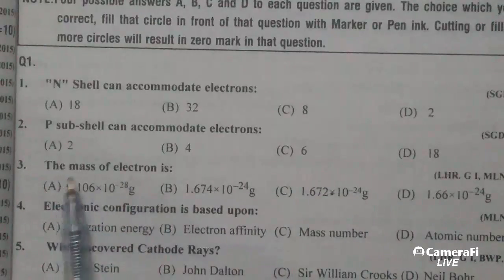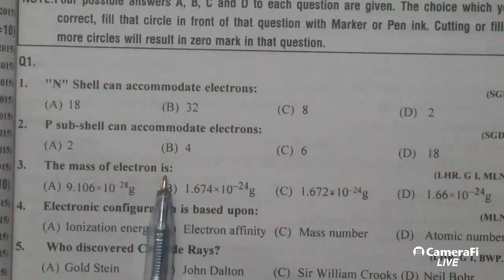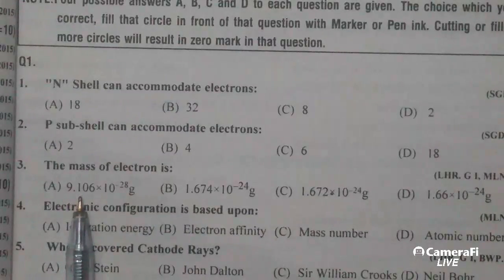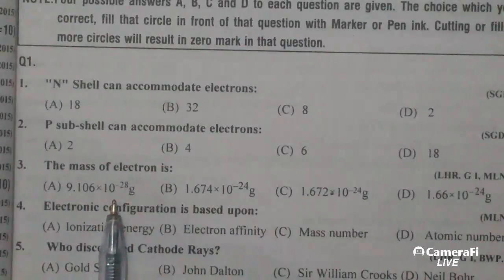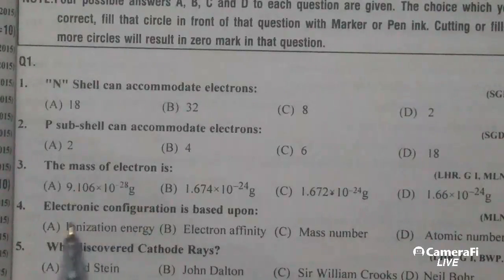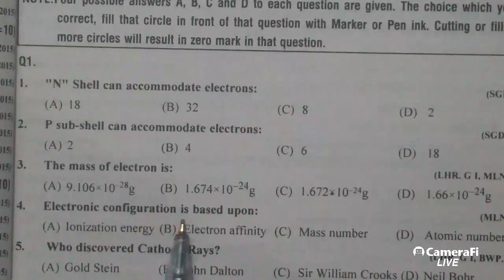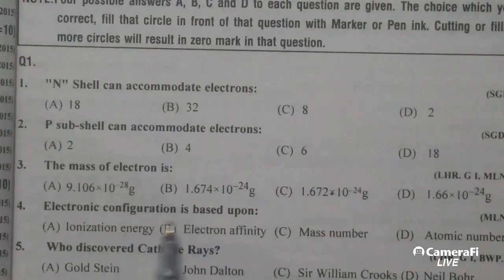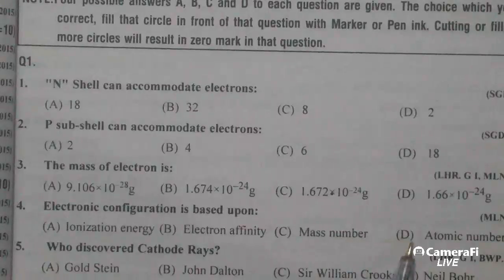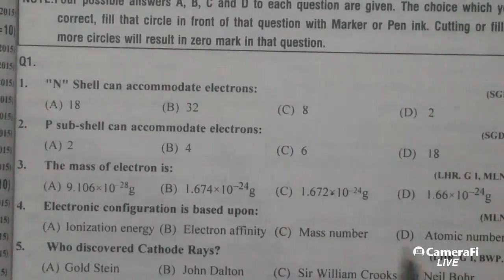The mass of electron is. Electron کا mass ہوتا ہے 9.106 multiplied by 10 raised to power minus 28 grams.